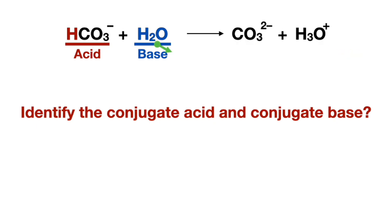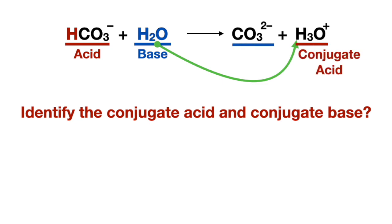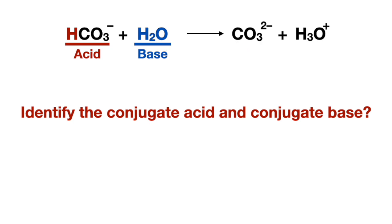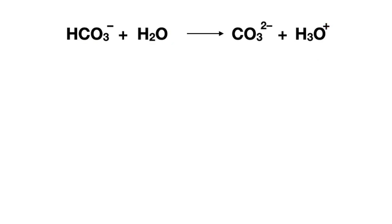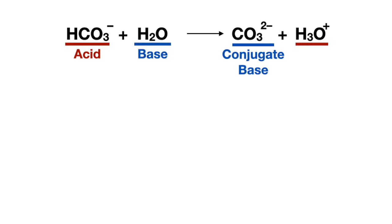Or follow the base to the product side, making that the conjugate acid and the other product the conjugate base. Note that even with conjugate acids and bases, the negatively charged product is the base and the positively charged product is the acid — the fundamental positive and negative rule still applies, so you can easily identify the conjugate base as the negatively charged product and the conjugate acid as the positively charged product. So we have the acid and its conjugate base, and the base and its conjugate acid.